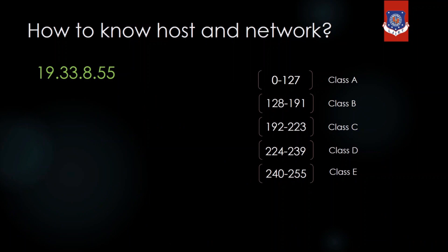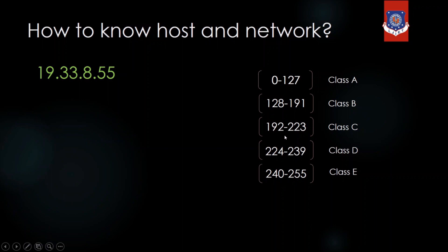How to know how many bits are for the host and how many for the network depends on the class of the IP address. To find the class, check the first octet. If the first octet is in the range 0 to 127, it is Class A. Range 128 to 191 means Class B. Range 192 to 223 means Class C. Range 224 to 239 is Class D. Range 240 to 255 is Class E.